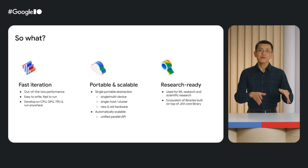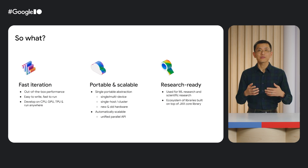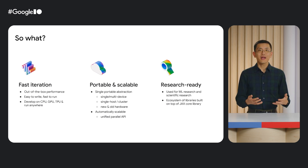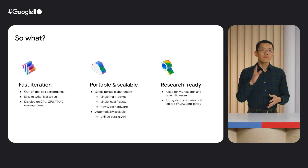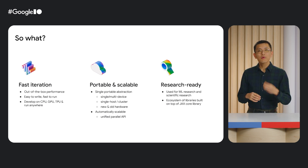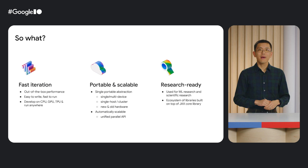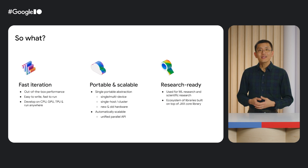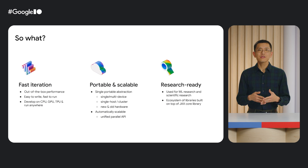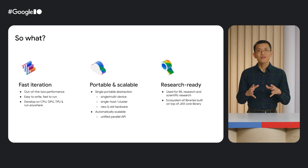So far in this first half of the talk, we've introduced some JAX basics and talked about how you might get started. From the NumPy API to its modern scientific computing features of automatic differentiation, batching, and compilation, JAX offers a robust set of tools to easily write highly performant code that can run on any hardware. JAX has really found itself at the forefront of research and scientific computing, serving as a foundation for an ever-evolving ecosystem of libraries.